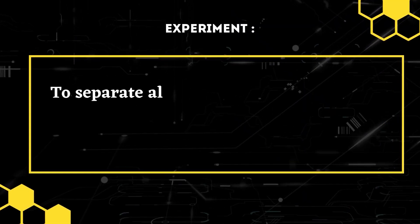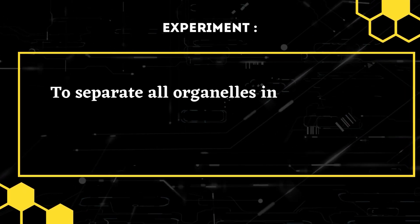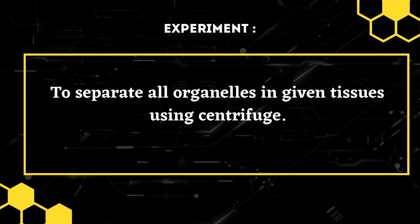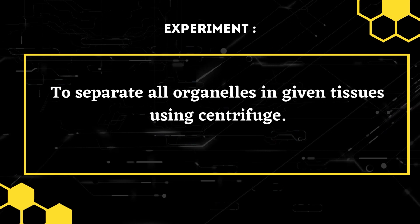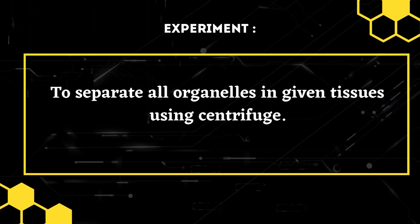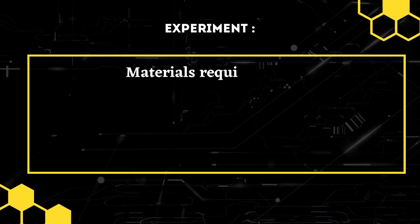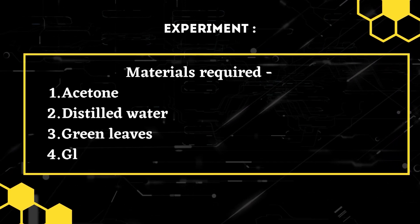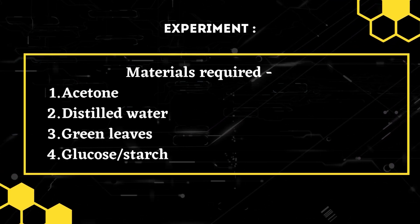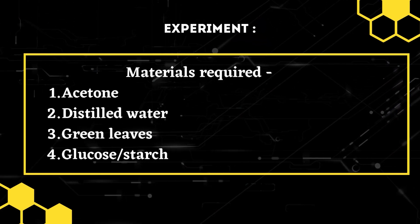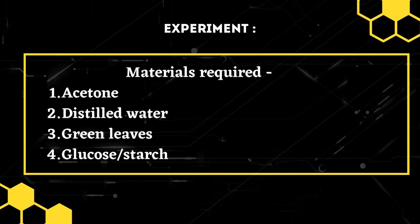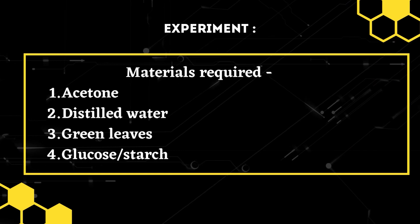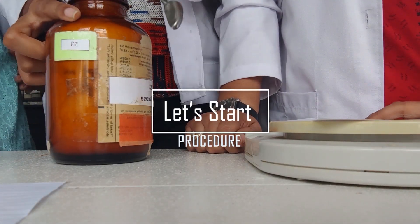Hi everyone, today we will be doing an experiment to separate all organelles in a given tissue using centrifugation. Centrifugation is the process which separates or concentrates material suspended in a liquid media. The principle involved is sedimentation. The basic materials required are acetone, distilled water, green leaves, glucose, and starch. This technique separates particles suspended in liquid media under the influence of a centrifugal field.